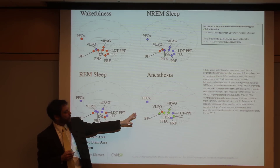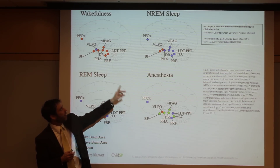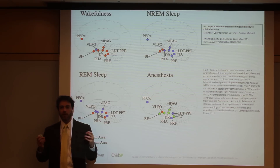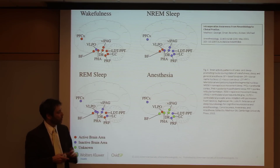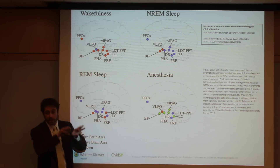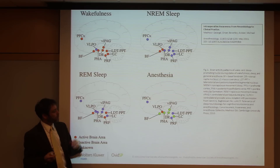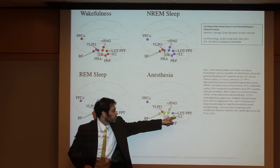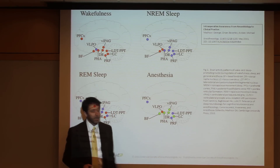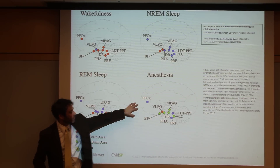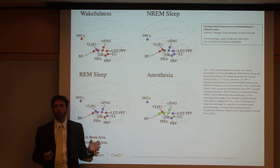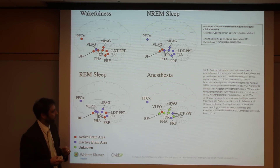Regarding anesthesia, some of the nuclei that are active in non-REM sleep, especially the ventrolateral preoptic area, are probably also active in general anesthesia. It's likely that general anesthetic agents like propofol and the volatile anesthetic agents have some of their action through activation of this VLPO area, which then sends inhibitory signals to many of the arousal pathways. Some arousal pathways like the lateral dorsal and pedunculopontine tegmental area are inactive, as well as the reticular formation and the prefrontal cortex.